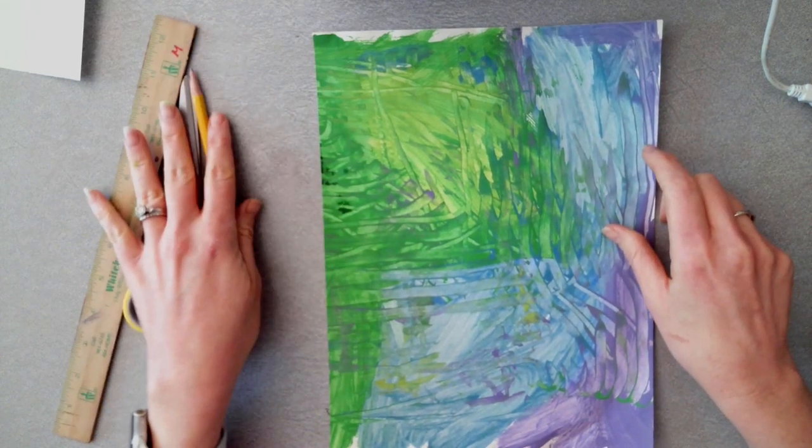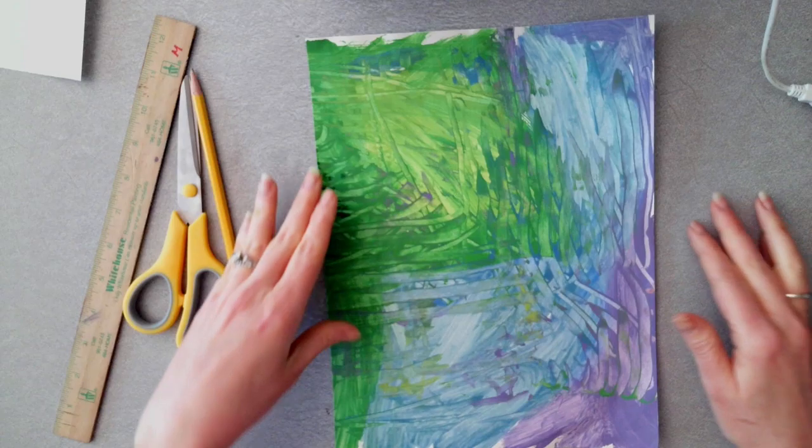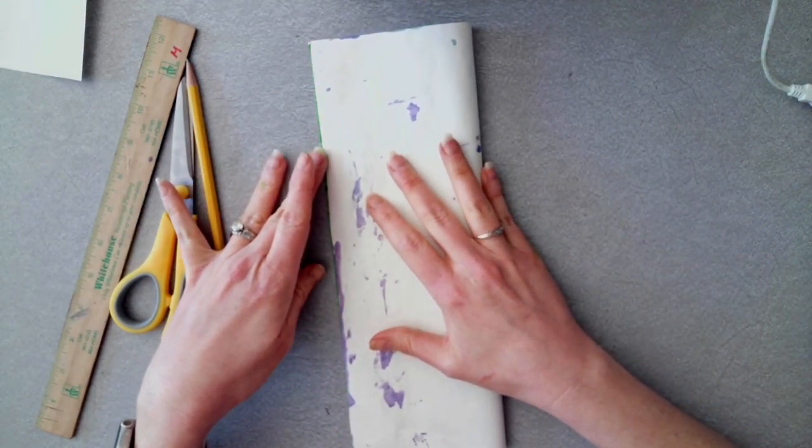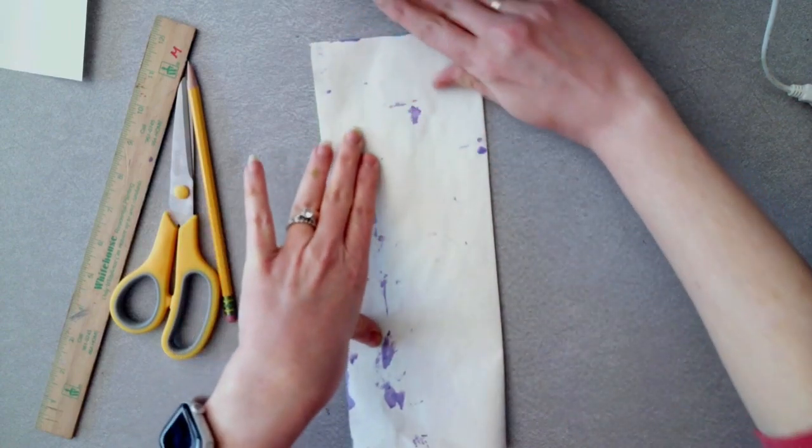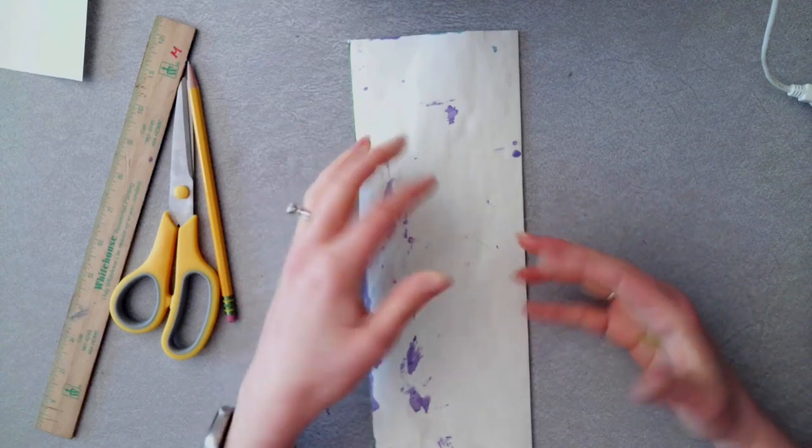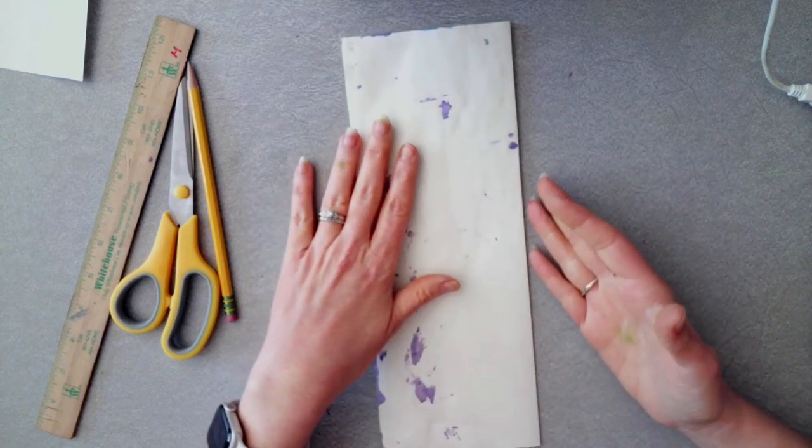Okay. So first thing we're going to do is we're going to take our paper. We're going to have it go vertical, nice and tall. And I want you to fold it in half vertically. Line up as best you can and do a nice crease. Now this paper is thicker because one, it's used drawing paper and two, we painted on it. So it's a little thicker.